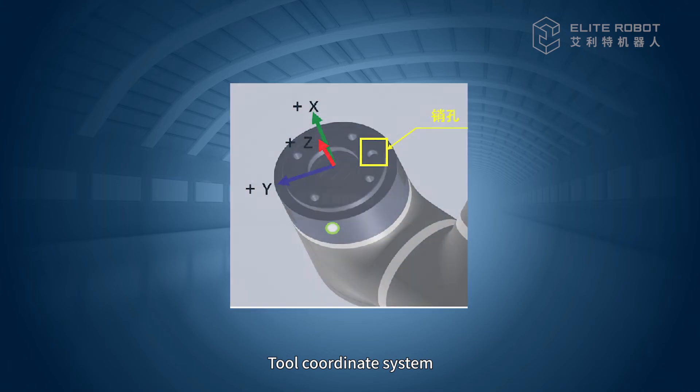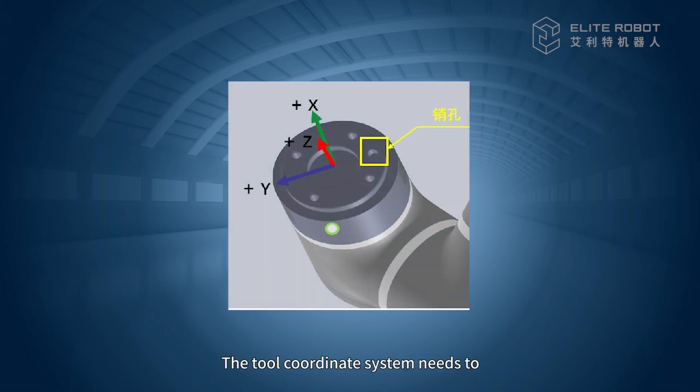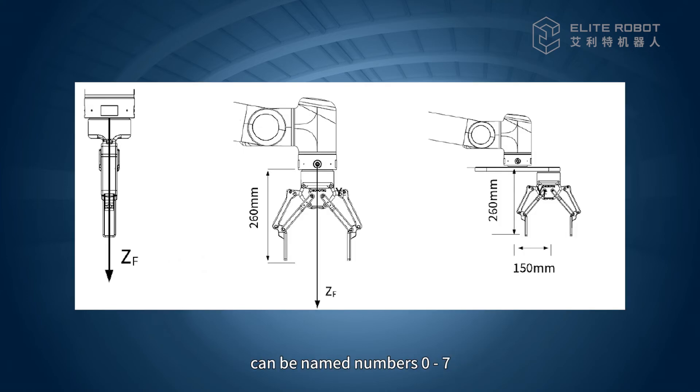The tool coordinate system needs to define the tool center point and the tool direction. The tool coordinate system can be set with reference to the flange coordinate system. The flange coordinate system of Elite Robot takes the center point of the flange as the origin. The opposite direction of the pinhole is the positive y-direction. And the x-direction can be obtained using the right-hand rule. User-defined tool coordinate systems can be named numbered 0 to 7.